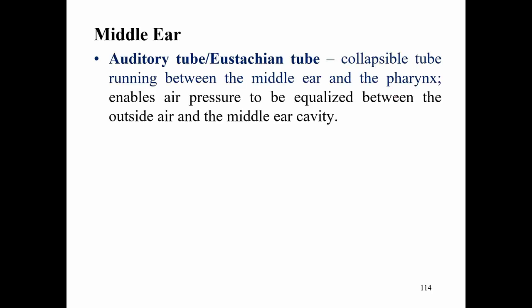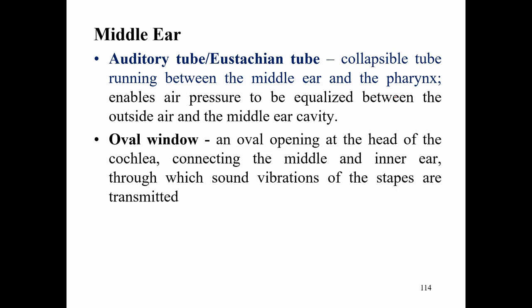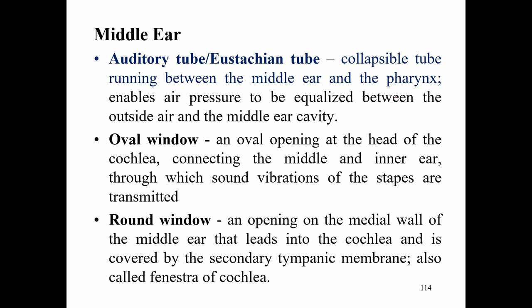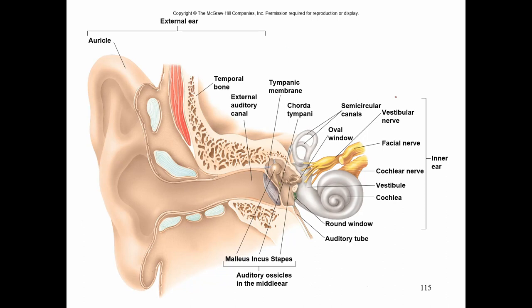The auditory tube, or Eustachian tube, is a collapsible tube running between the middle ear and the pharynx, enabling air pressure to be equalized between outside air and the middle ear cavity — felt when riding an airplane or going underwater. The oval window is an oval opening at the head of the cochlea connecting the middle and inner ear, through which sound vibrations of the stapes are transmitted. The round window is an opening covered by a secondary tympanic membrane, also called the fenestra of the cochlea.